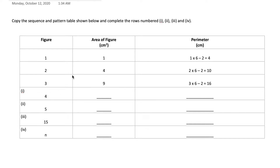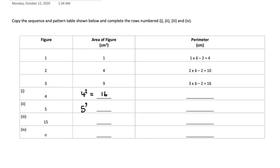We need to identify the pattern to complete this section. We look at the relationship between the figure and the area. We can see that figure 1 has area 1, figure 2 has area 4, figure 3 has area 9. So we can identify that we are squaring the figures. Therefore figure 4 gives 4 squared which is 16, and figure 5 gives 5 squared which is 25.